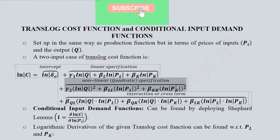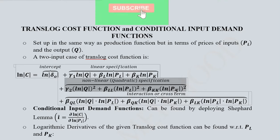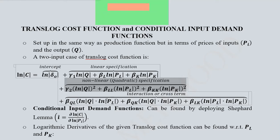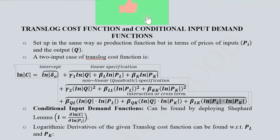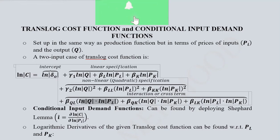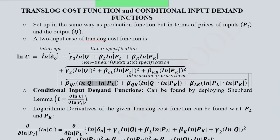We also have the nonlinear, that is quadratic, specification for three variables: the natural log of q squared, the natural log of price of labor squared, and the natural log of price of capital squared, with parameters named accordingly — gamma 1 with ln(q) and gamma 2 with ln(q) squared. We also have interaction terms for output and price of labor, output and price of capital, and the two input prices. Assuming symmetry, we write these once as B_QL, B_QK, and B_LK — there is no need for B_LQ, B_KQ, or B_KL. This completes the formation of the translog cost function.